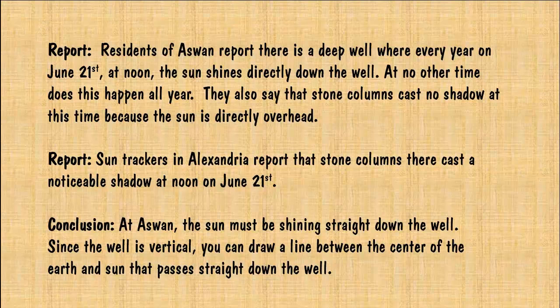This report caught his immediate interest. He was already convinced the earth was a sphere, so this event in Aswan meant that at high noon he could draw a straight line between the sun, the well, and the center of the earth itself. He checked the sun records for Alexandria, a town 524 miles north of Aswan. They report the stone columns there cast a noticeable shadow on June 21st. He started thinking about why this might be.